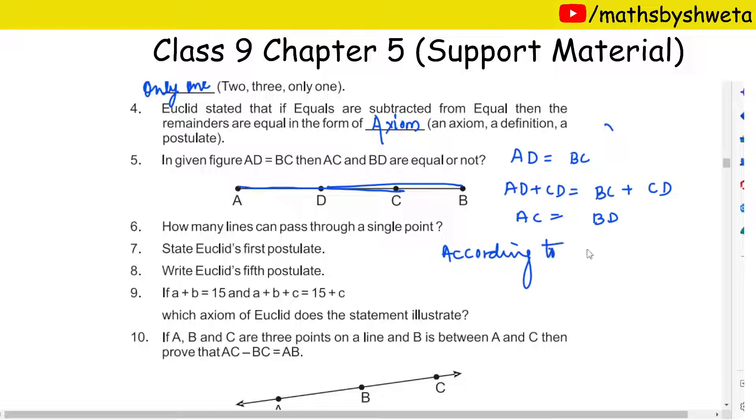According to axiom 2, AC is equals to BD. Clear.